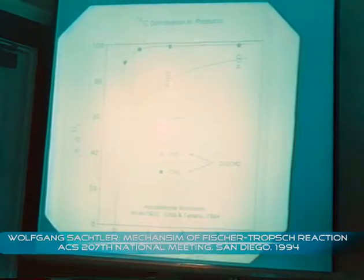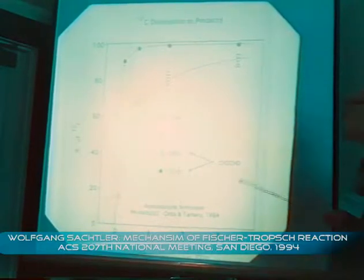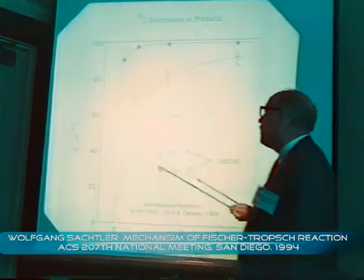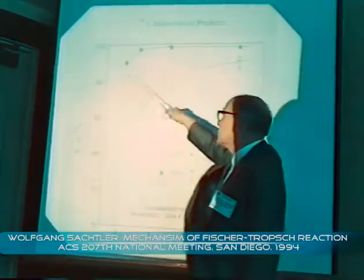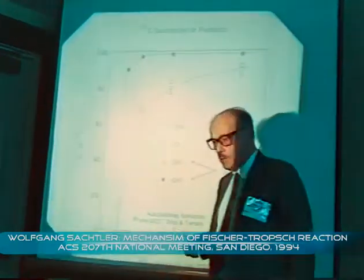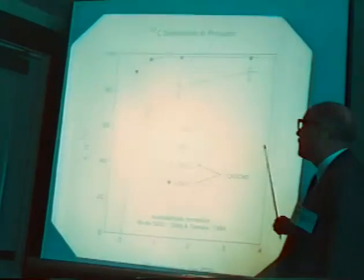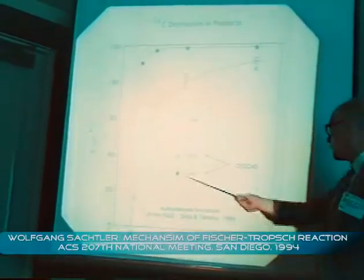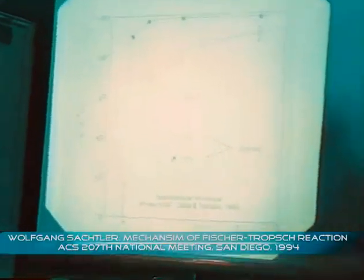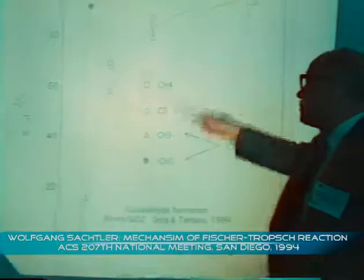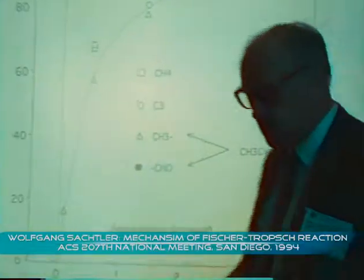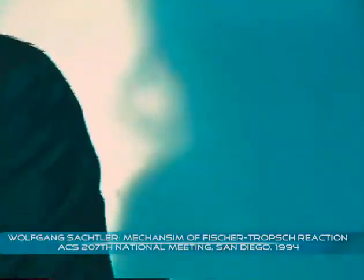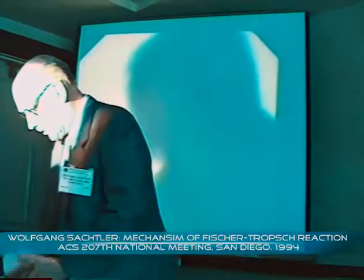So obviously the undissociated CO on the surface, which is in a virtually reversible equilibrium with the gas phase, is inserted and responsible for the aldehyde group, whereas dissociative adsorption, which is virtually irreversible, determines the hydrocarbons. But that still doesn't answer the question: how does the promoter — in this example, the manganese — do that?